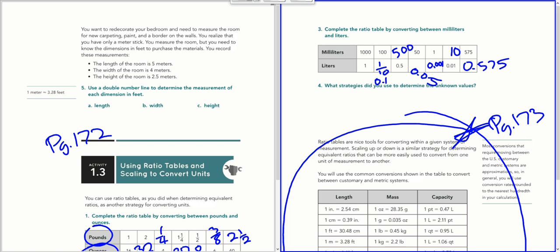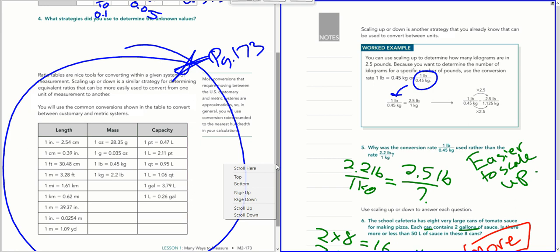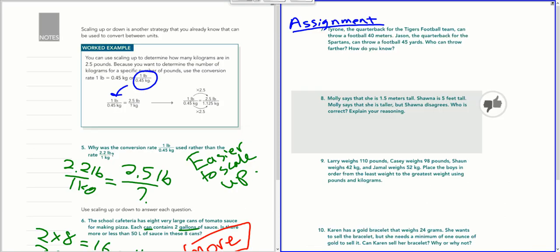And the way we're going to do this is using this conversion table over here. So I'm going to look for yards and meters. And right here, one meter is equal to 1.09 yards.